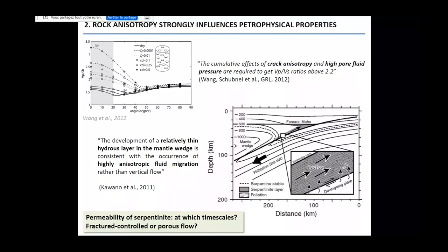As you all know, serpentinite is a strongly foliated material. So one good question is: at which timescales are we talking about? The permeability of serpentinite might be substantially different whether you look at experimental timescales, seismic timescales, or geological timescales. And this might indeed be the consequence of fast slip movements along the deep interface.